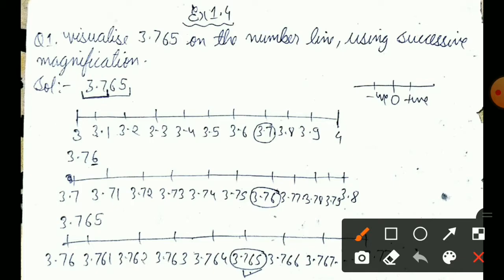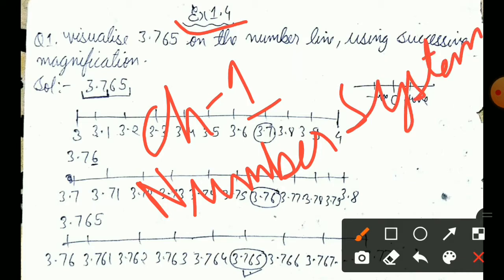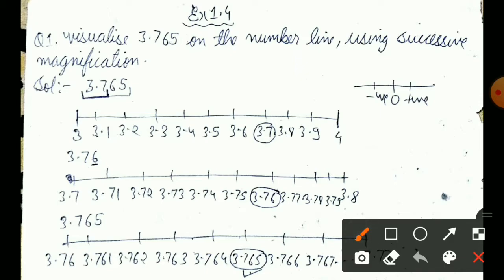Today's topic, we will discuss Exercise 1.4, which is the fourth exercise of the worksheet of Chapter 1. The name of Chapter 1 is Number System, which is the first chapter of Class 9th Mathematics. So this chapter's fourth worksheet we will discuss. Let's start without delay.